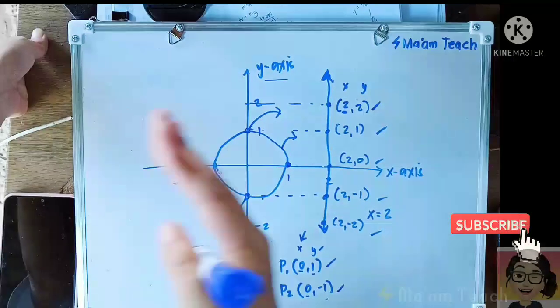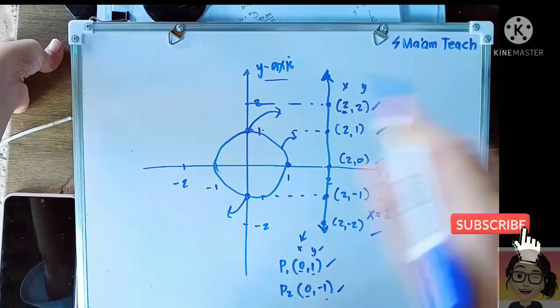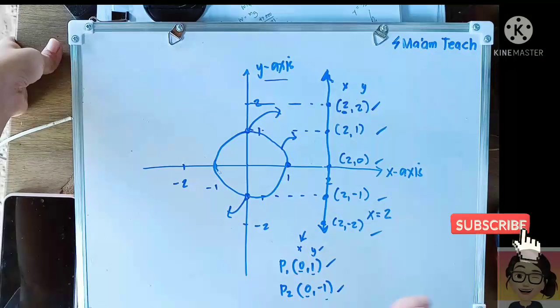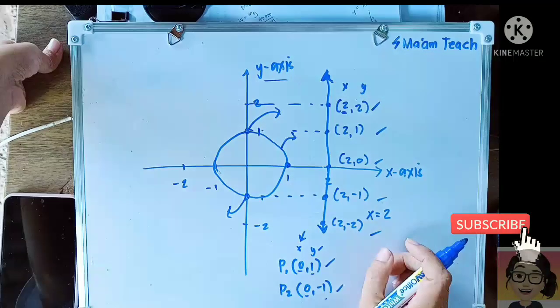Therefore class, this is the reason why a vertical line is not considered as a function.